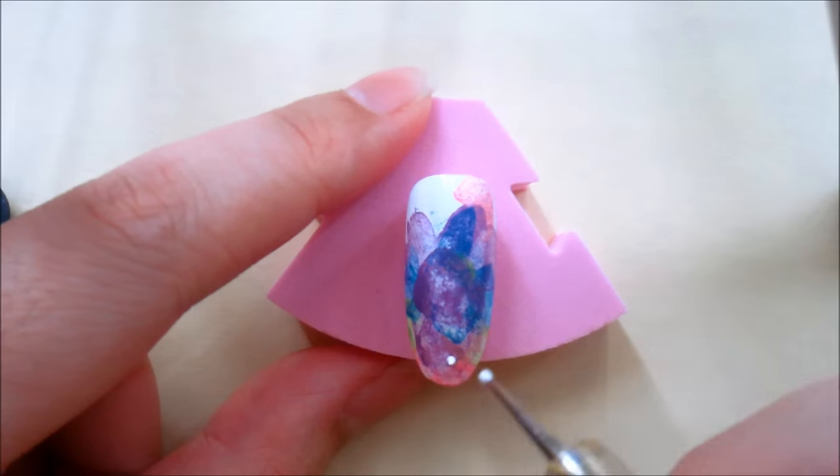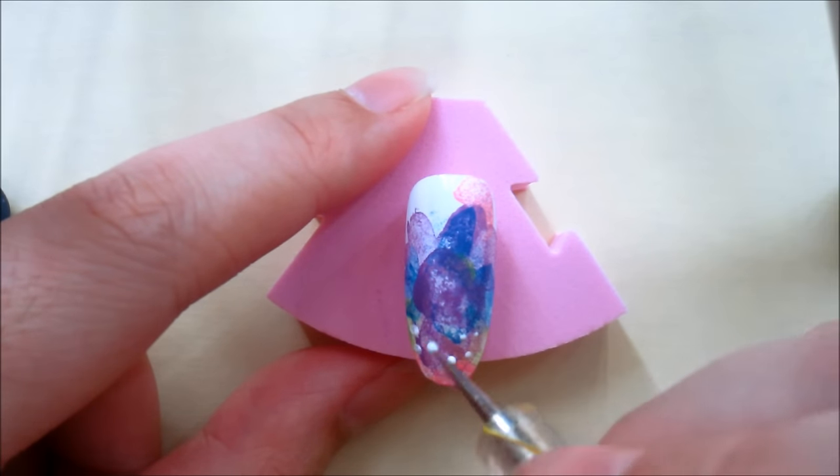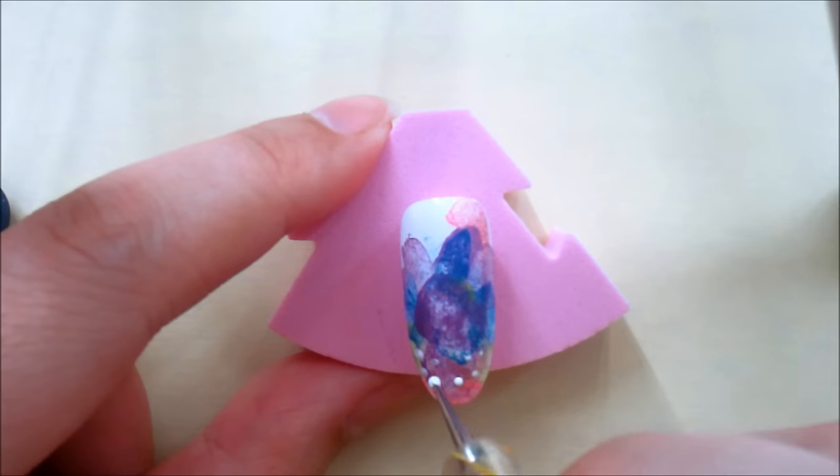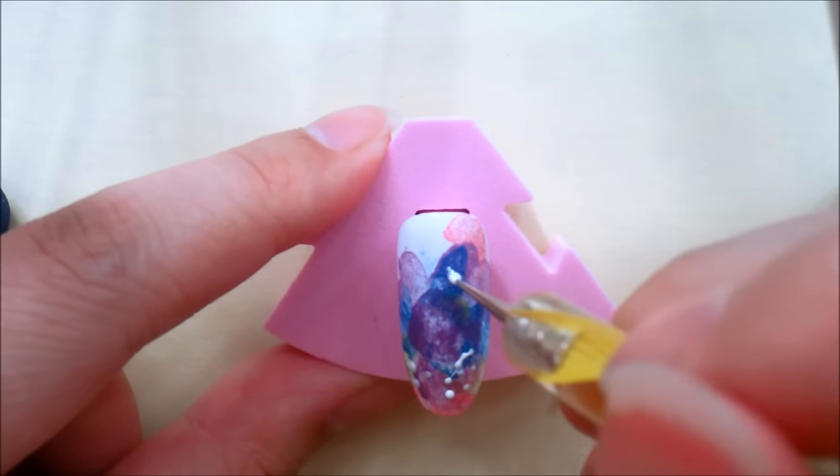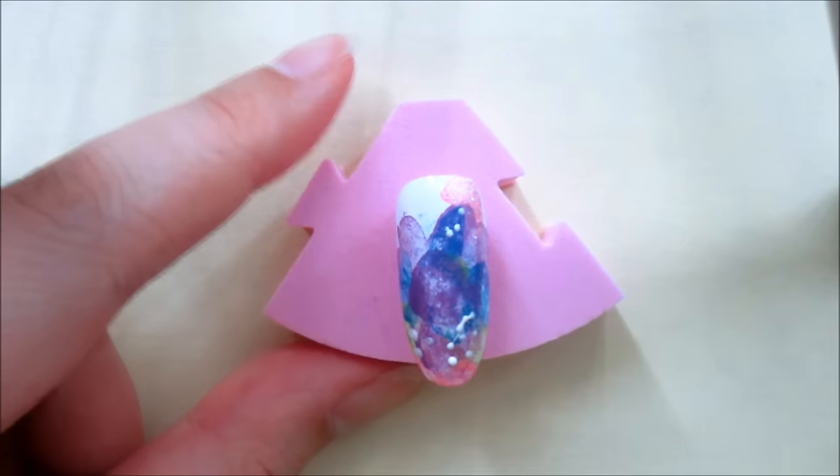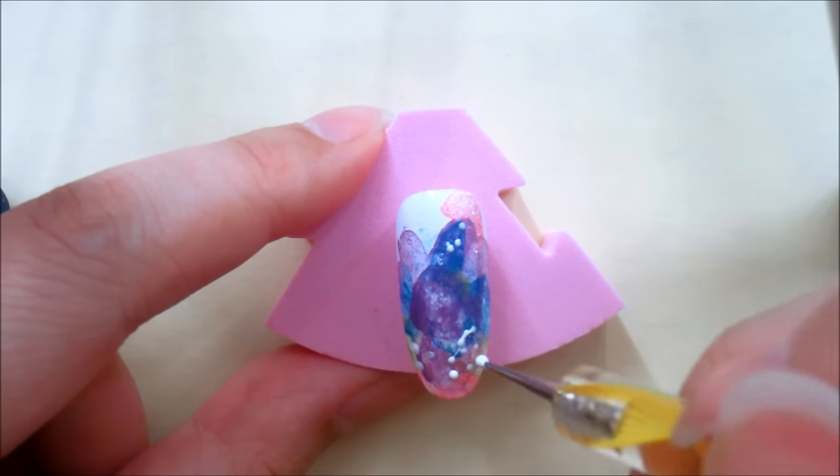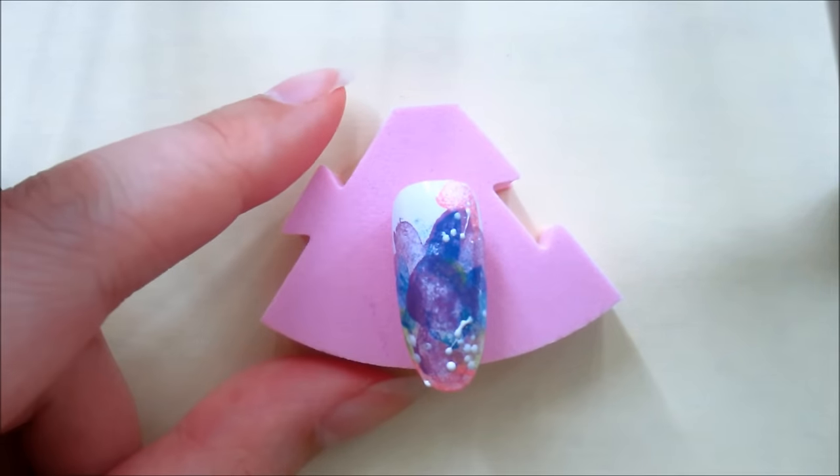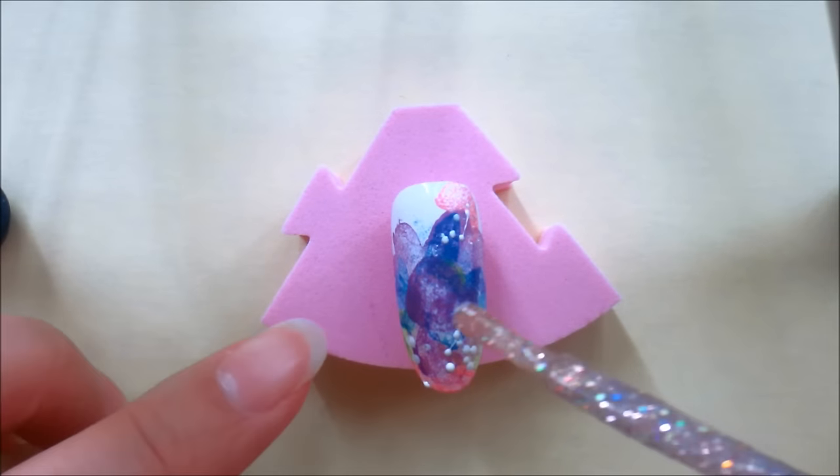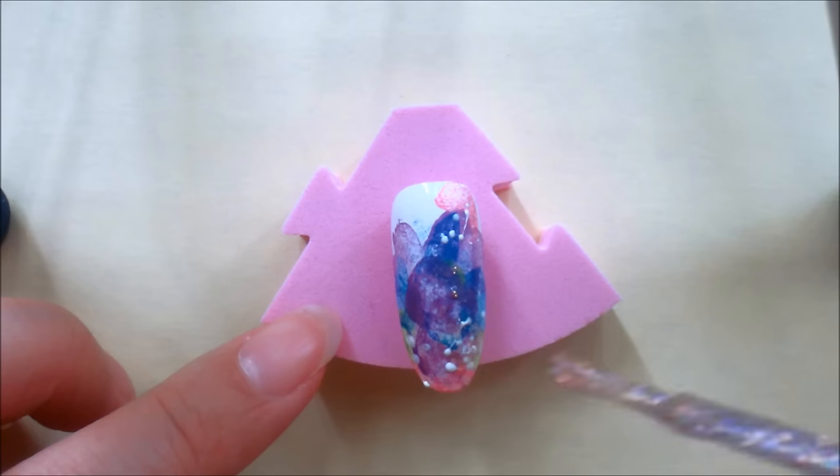Next, with a dotting tool or toothpick dipped in white nail polish, stipple on some white dots for the stars. Finally, swipe on some glitter polish over the stars.